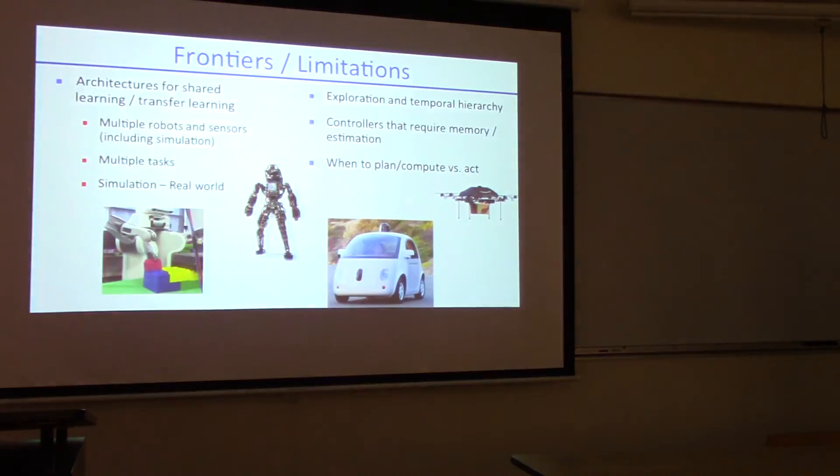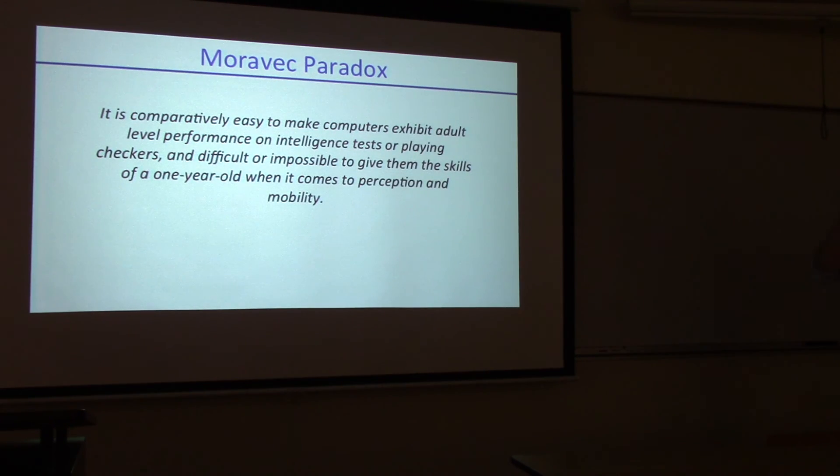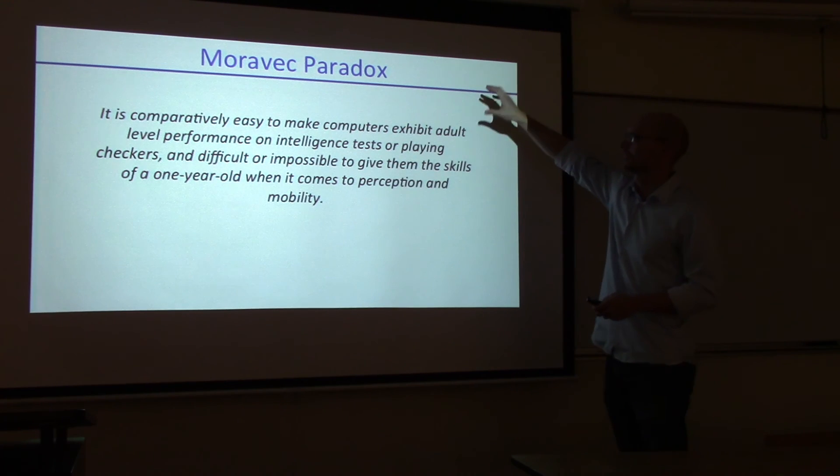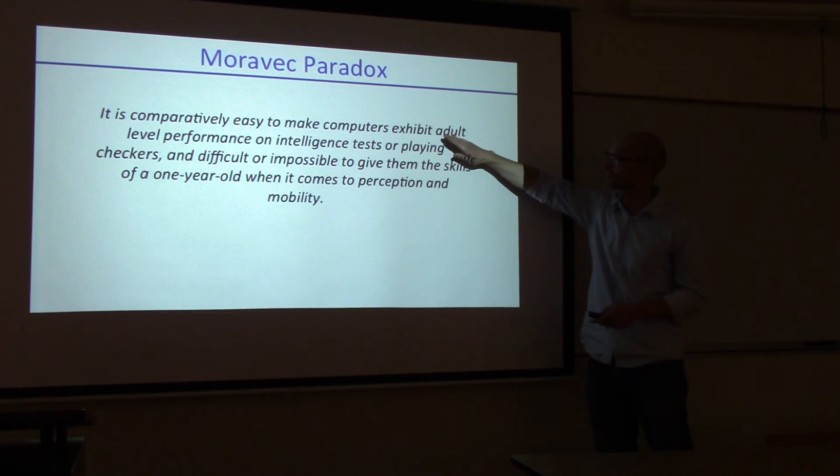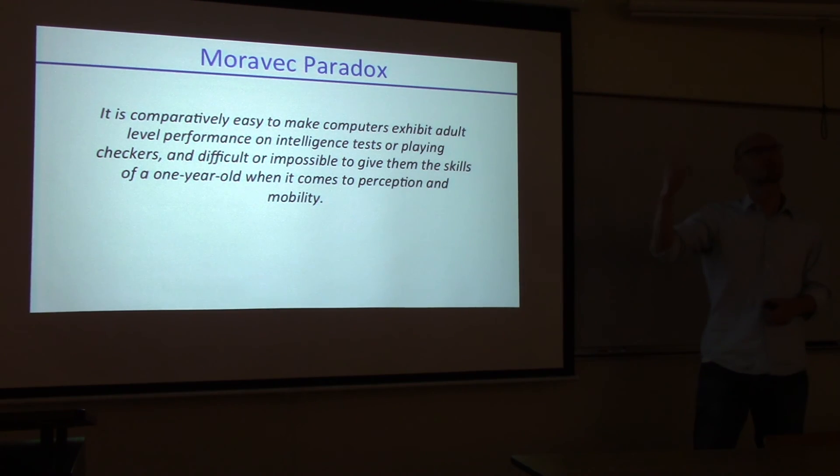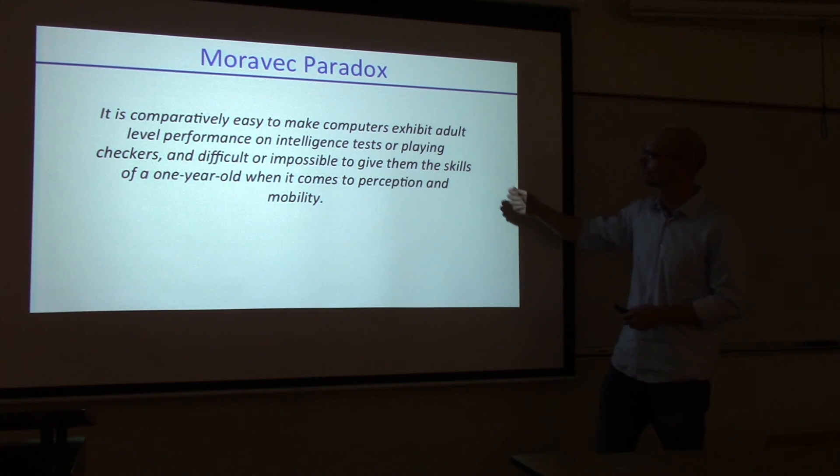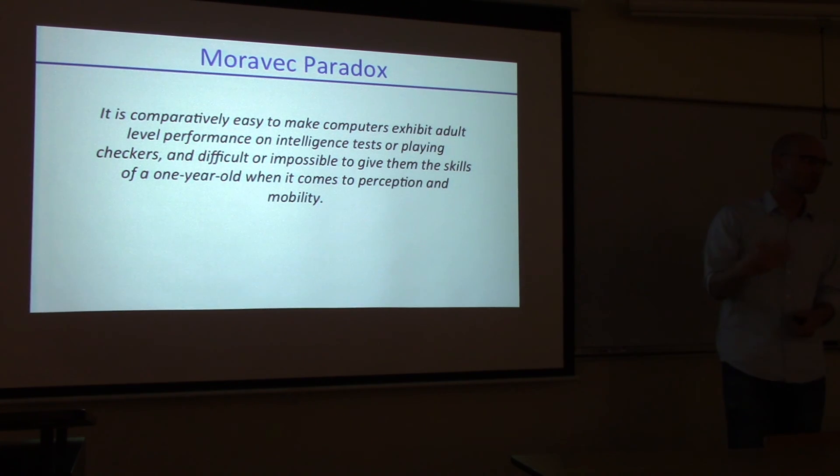I also want to leave you with some thoughts about robotics. Many people don't realize, but this was stated back in the 90s: it's comparatively easy to make computers exhibit adult-level performance on intelligence tests. Like maybe a few weeks ago, you saw us saying, oh, this computer passes the IQ test for a four-year-old. But these tests are actually relatively easy to get a computer to do, or playing checkers, which is very structured. What is much harder or nearly impossible is to give a computer or a robot the skill of a one-year-old or a two-year-old. The visual motor skills that they acquire, the ability to acquire new things, the learning they do is much harder to get a computer to do than these structured things like IQ tests or checkers or chess. Thank you.